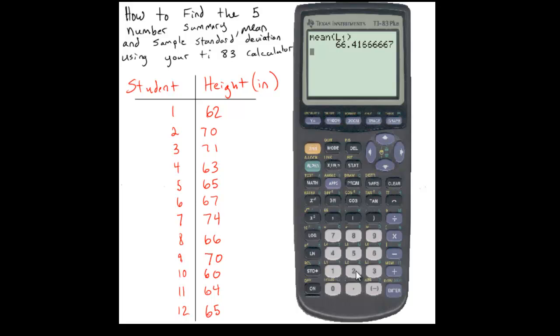I can also perform different arithmetic on this calculation. What I mean by that is let's say I wanted to multiply the mean by three for some reason. Well I can take the mean of list one and multiply it by three.